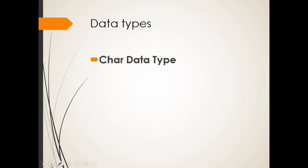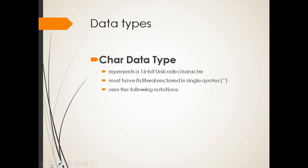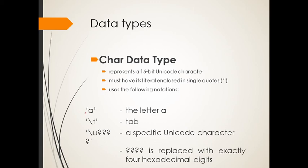Let's proceed. A char data type, or character, represents a 16-bit Unicode character. It must have its literal enclosed in a single quote, just like what I keep on mentioning earlier. It uses the following notations. For example, like this, like that. This is a tab. Specific Unicode character and all.